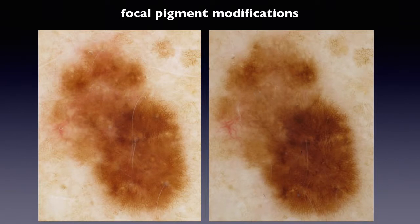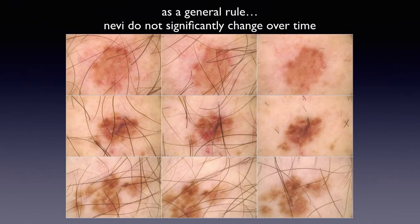Or this other example with a lesion acquiring regression structures during follow-up, and this was an in situ melanoma. Finally, we can have a focal pigment modification like in this case here. As a general rule, nevi do not change significantly over time, and this allows us to identify these changes as important for excision and these lesions as melanoma.